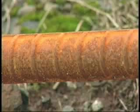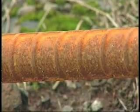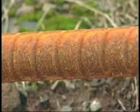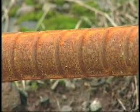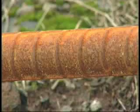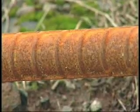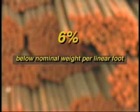Only if the rust has deteriorated the reinforcing bar so badly that the weight, dimensions, cross-sectional area, and tensile properties of a hand-wire brush specimen are reduced below those specified by the ASTM specification would this be cause for rejection. As an example, the weight would have to be 6% below the nominal weight per linear foot specified to cause rejection.